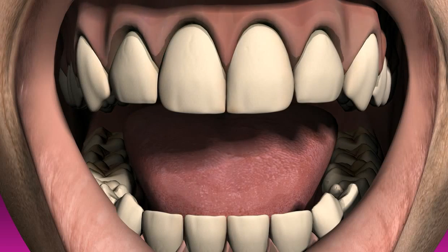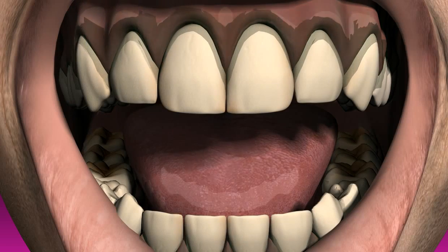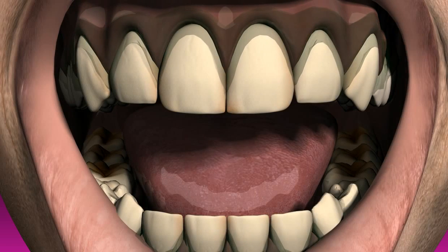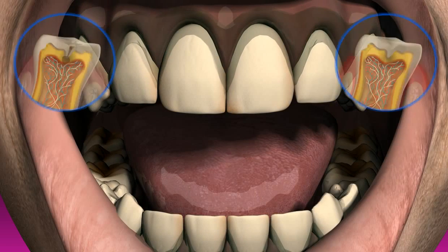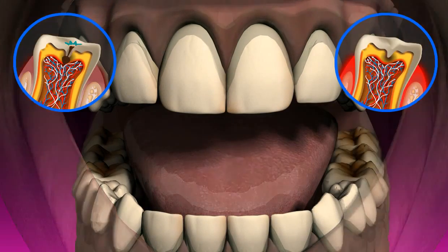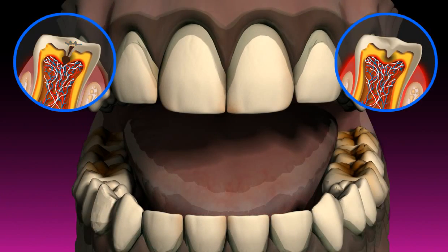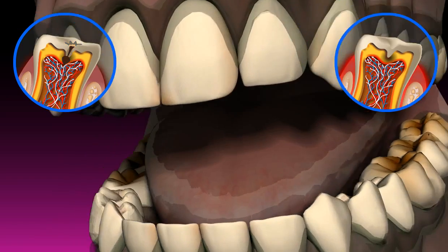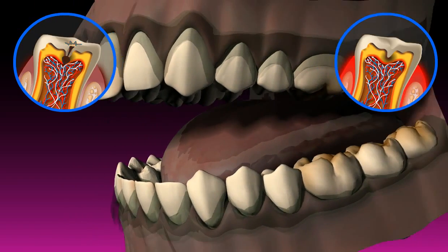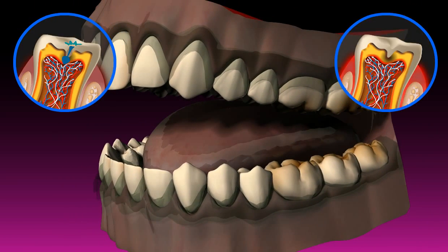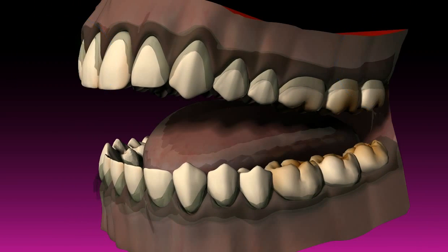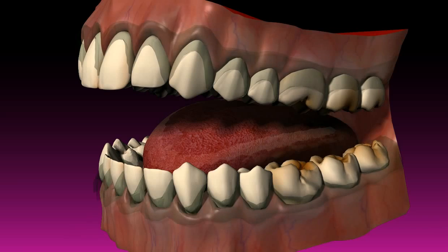Plaque is the term used for tooth deposits. Plaque causes caries and periodontitis. It is a biofilm formed by bacteria on the teeth, resulting from saliva and food scraps.